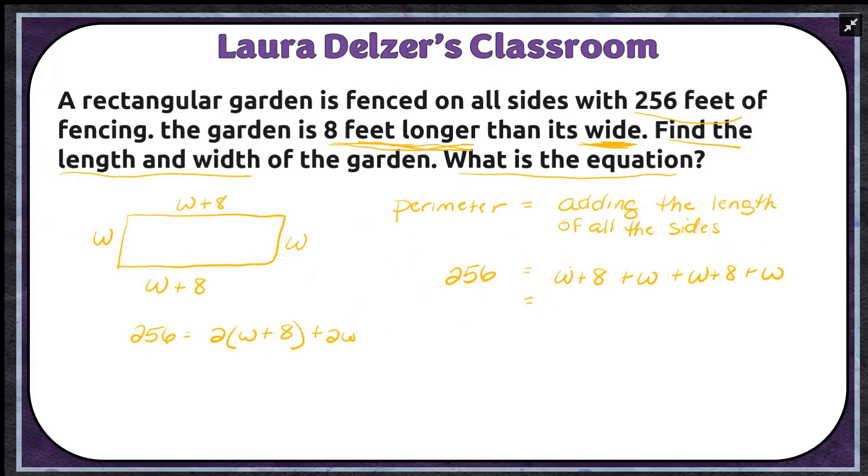So I'm going to combine my like terms. I've got a w and a w and a w and a w, so I've got four w's. And then I've got 8 plus 8, so that's 16. And I'll bring down my 256. So now I'm going to move my constant, that's my number without the variables. I'm going to subtract 16.